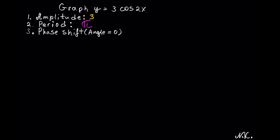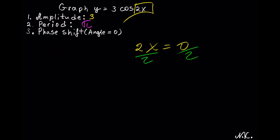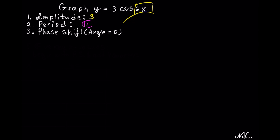The next thing we need to do is calculate the phase shift. We need to make sure the angle is equal to 0, so 2x has to equal 0. Since 2 is multiplying x, we divide both sides by 2. The 2s cancel and we get x equals 0, so our phase shift is equal to 0.